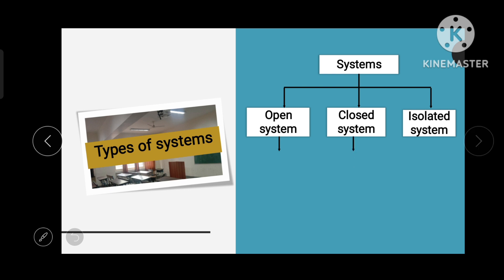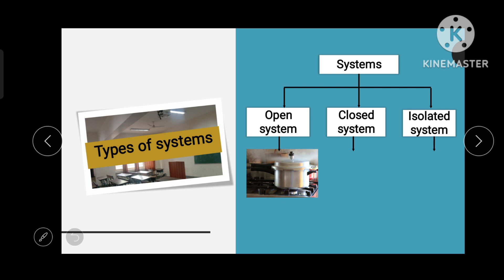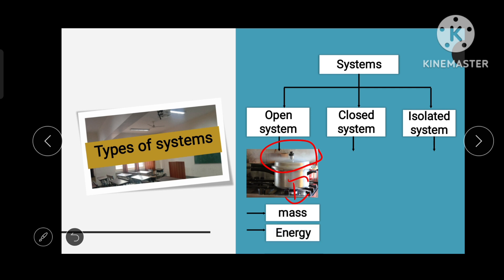I will give one example for each system. For the open system, the pressure cooker is a good example. We give heat from the bottom side, so heat is transferring to whatever is inside the pressure cooker. Also, when the whistle comes, evaporation occurs — that evaporation is mass transfer from inside the system to the surrounding. So in an open system, both mass transfer and energy transfer occur between the system and surrounding.